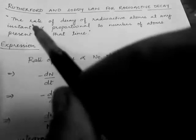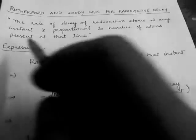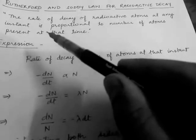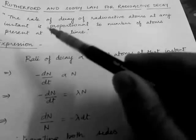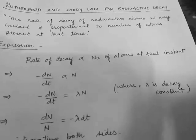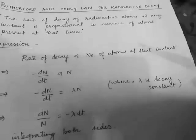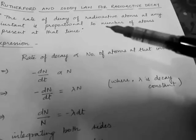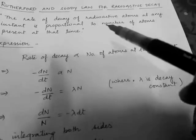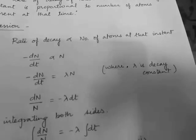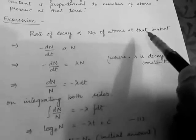We have a law called Rutherford and Soddy's law for radioactive decay. The law states: the rate of decay of radioactive atoms at any instant is proportional to the number of atoms present at that time. For example, if we have 1000 atoms there will be a certain rate of decay, but if we have 2000 atoms the rate of decay will be doubled, because the rate of decay is directly proportional to the number of atoms present.